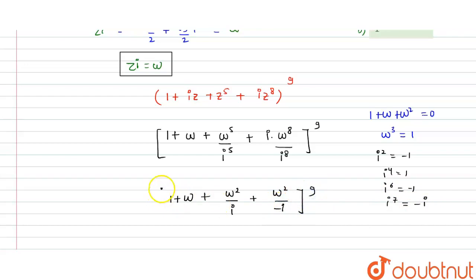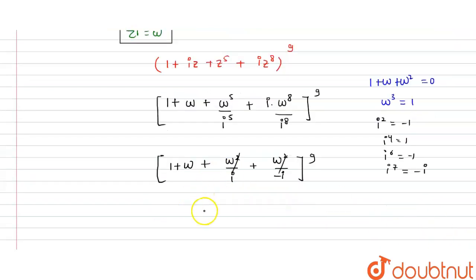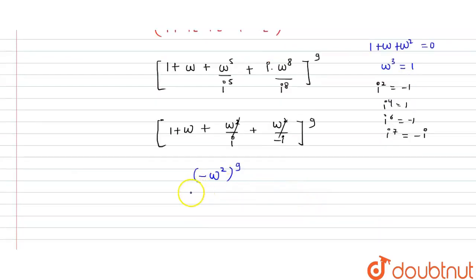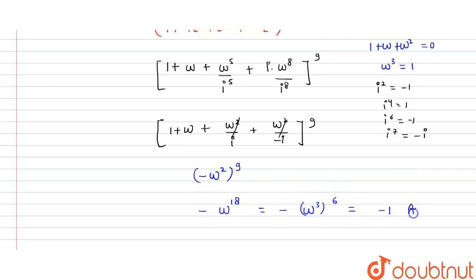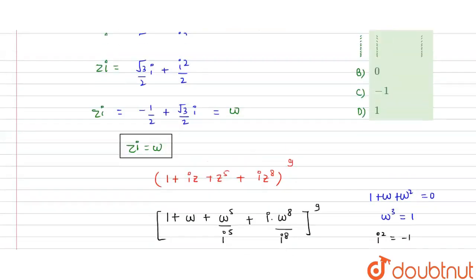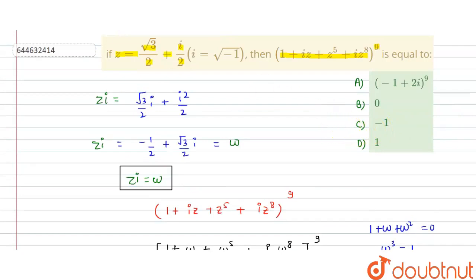After cancellation, we have (1 + ω)^9. Since 1 + ω = −ω², this becomes (−ω²)^9. Since 9 is odd, the minus sign comes outside: −(ω²)^9 = −ω^18 = −(ω³)^6 = −1^6 = −1. So the answer is −1, and option C is the correct answer.